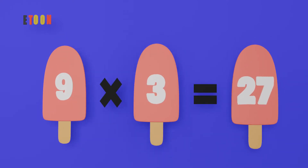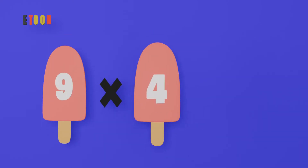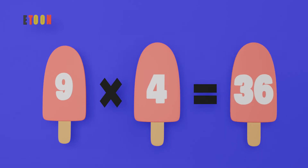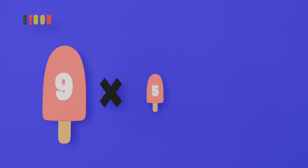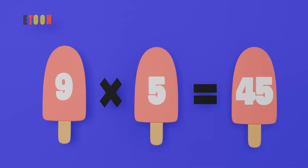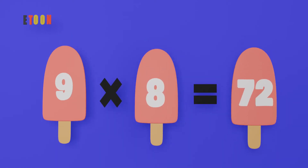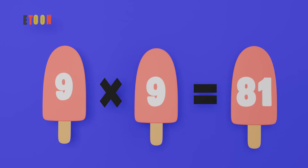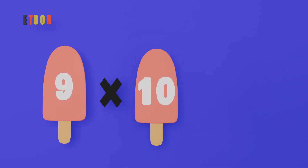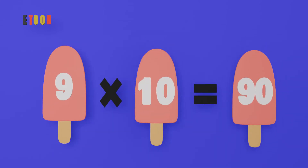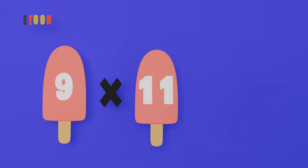9 times 4 is 36, 9 times 5 is 45, 9 times 6 is 54, 9 times 7 is 63, 9 times 8 is 72, 9 times 9 is 81, 9 times 10 is 90, 9 times 11 is 99.